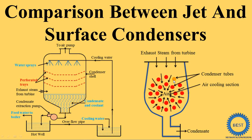The red color represents the number of tubes. Inside the tubes, the cooling water is passed, and outside the tubes, the exhaust steam is passed. So in a surface condenser, the exhaust steam from the turbine and the cooling water do not come into direct contact. But in a jet condenser, the steam and the cooling water do come into direct contact.